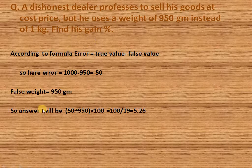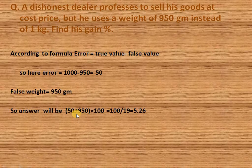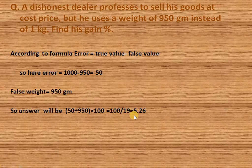Percentage of gain equals error divided by false weight, into 100. So here, error is 50 divided by 950, into 100, which equals 100 divided by 19. After calculating this, we get 5.26 percent, or 5 and 5/19 percent.